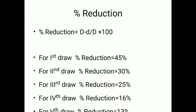Percentage reduction is given by the formula: (capital D minus small d) divided by capital D, multiplied by 100, where capital D is the blank diameter and small d is the diameter of the cup to be formed. For the first draw, percentage reduction is restricted to 45%. For the second draw it is 30%, for the third draw it is 25%, for the fourth draw it is 16%, and for the fifth draw it is 13%, as shown on the screen.